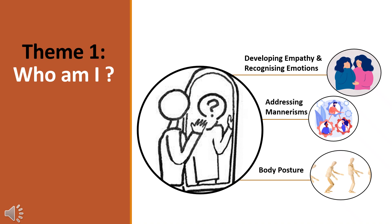In order for a young adult to understand social skills, they must first understand who they are. This can firstly involve developing empathy and recognising the emotions of others and how to respond to them. This can also involve addressing mannerisms and learning what may be considered socially unacceptable behaviour, such as grabbing and rocking.